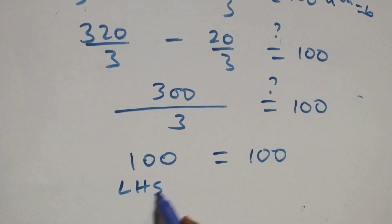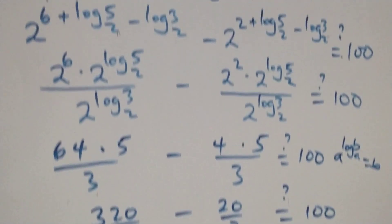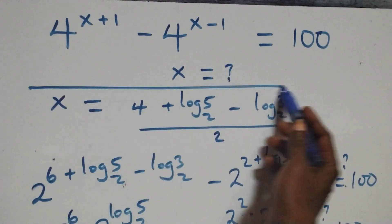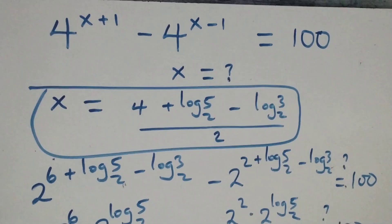The left hand side equals to the right hand side, and therefore we conclude that x equals to 4 plus log 5 base 2 minus log 3 base 2, all over 2, satisfies the given problem. Thank you for watching — don't forget to subscribe for more videos, turn the notification bell, share the video, give a thumbs up, and put your comments. See you next class, bye for now.